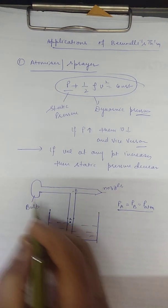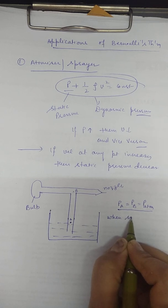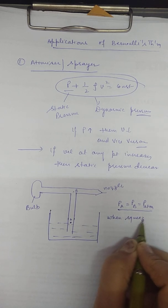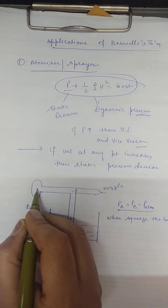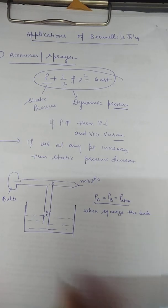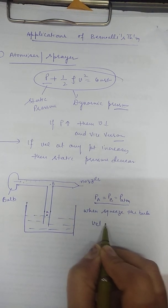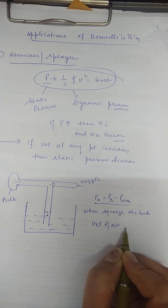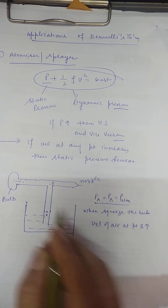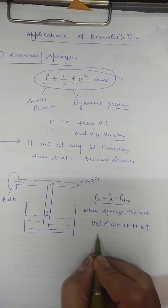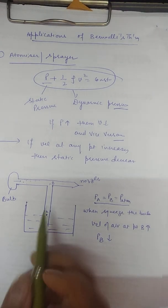When you squeeze the bulb, the velocity of air at point B increases. If the velocity of air at point B increases, then the pressure at point B decreases.